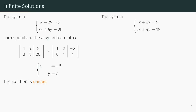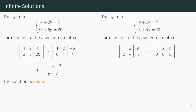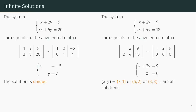Let's apply the same process to the system x plus 2y equals 9 and 2x plus 4y equals 18. First, we write down the augmented matrix and then row reduce. The rows of the row reduced matrix correspond to the equations x plus 2y equals 9 and 0 equals 0. This is different than the previous situation because there are many pairs of x's and y's that satisfy this system of equations. For example, x equals 7 and y equals 1, or x equals 5 and y equals 2, or x equals 3 and y equals 3 are all solutions. Solutions to this system are not unique.